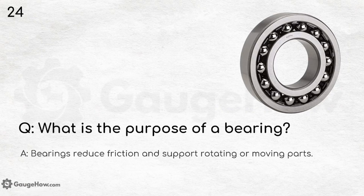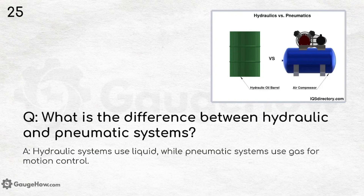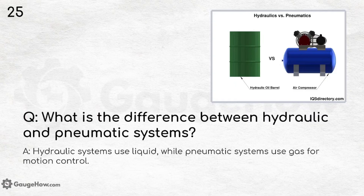What is the purpose of a bearing? Bearings reduce friction and support rotating or moving parts. There are also interview questions on bearing nomenclature — from the nomenclature you should be able to identify the type of bearing. What is the difference between hydraulic and pneumatic systems? Hydraulic systems use liquid while pneumatic systems use gas for motion control. Remember: hydraulic relates to liquid and pneumatic relates to gas.